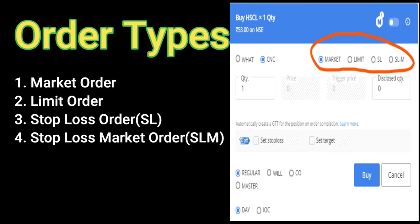On the right I have shown you with the help of the Kite application from Zerodha. You can see four different types of order types: market order, limit order, SL which means stop-loss order, and SLM which means stop-loss market order. We will be discussing these four order types — their benefits, drawbacks, and what they are all about.